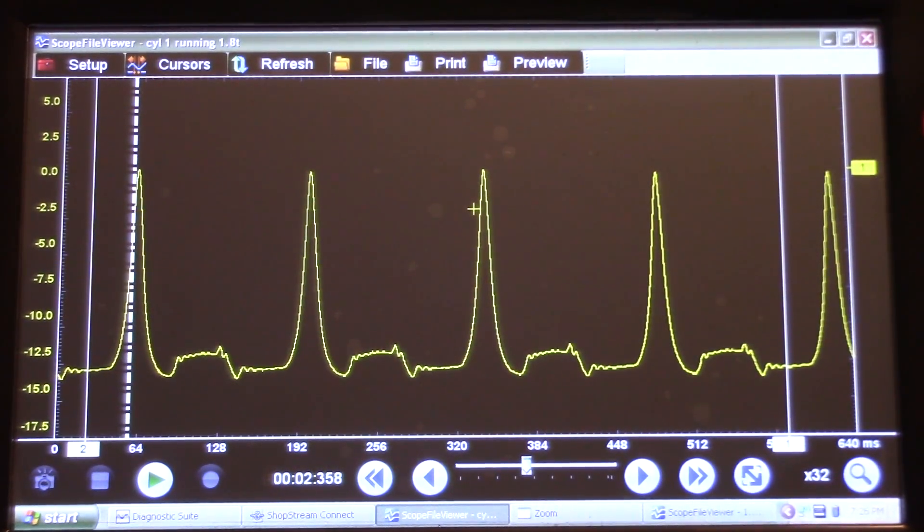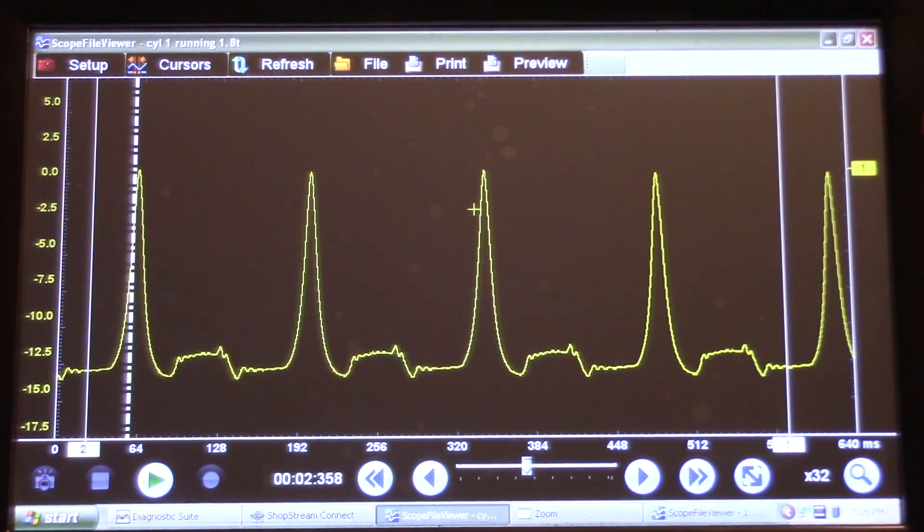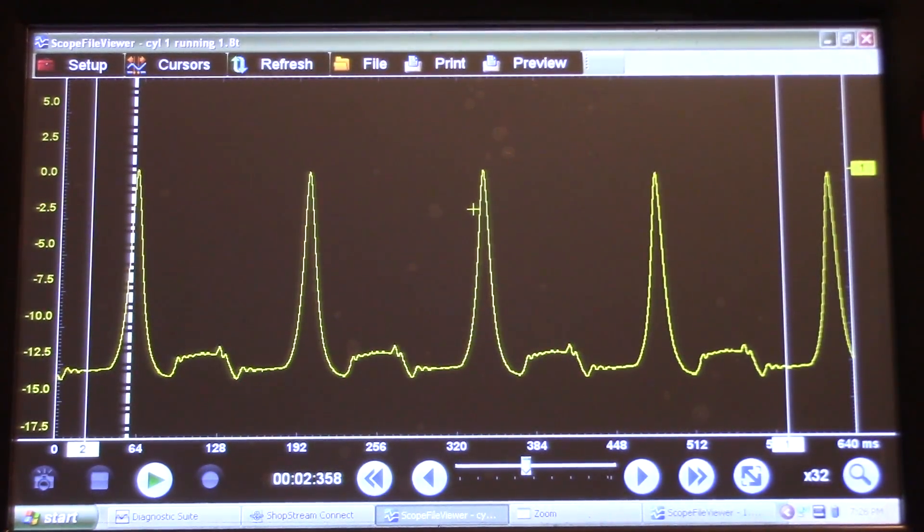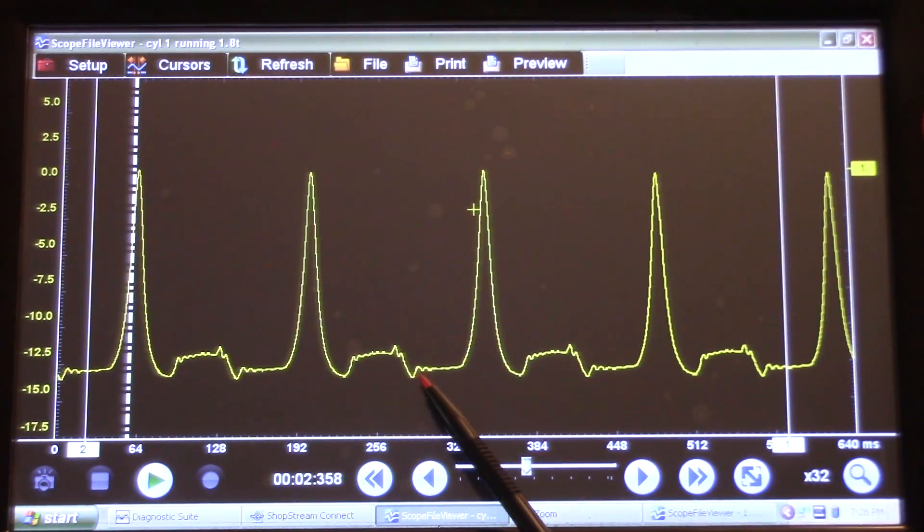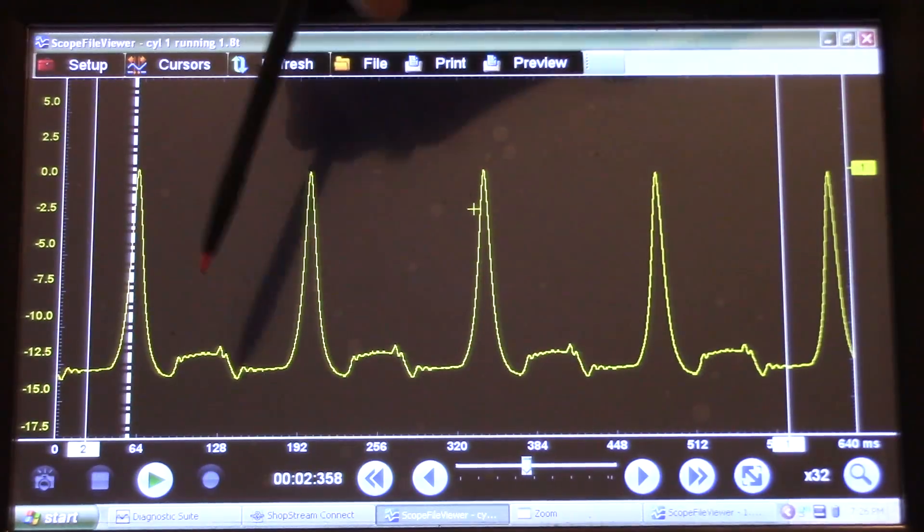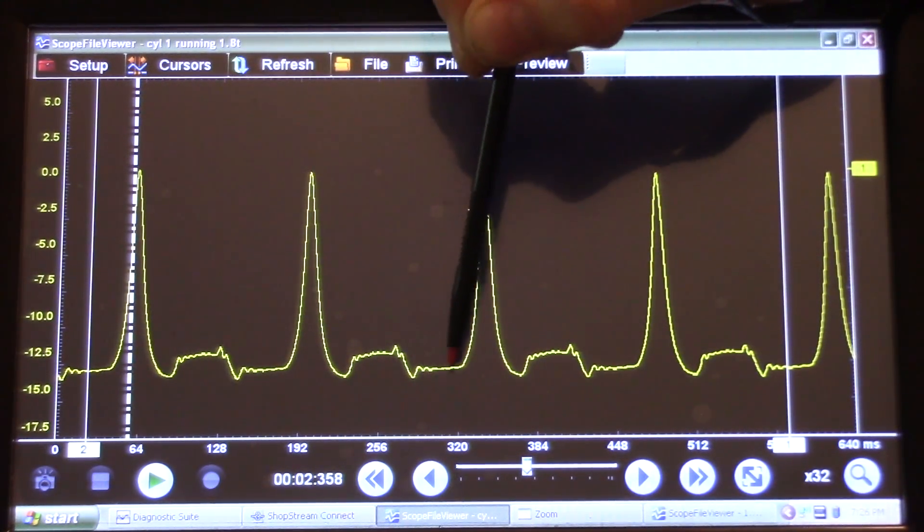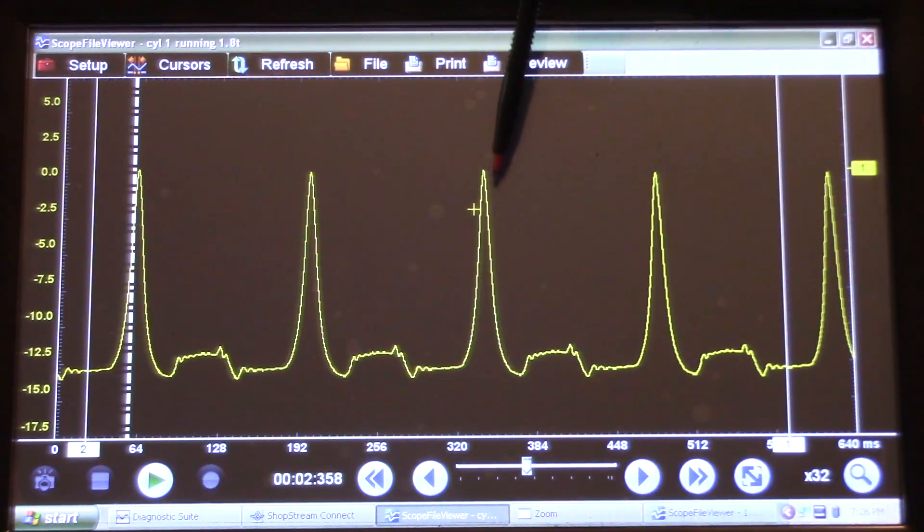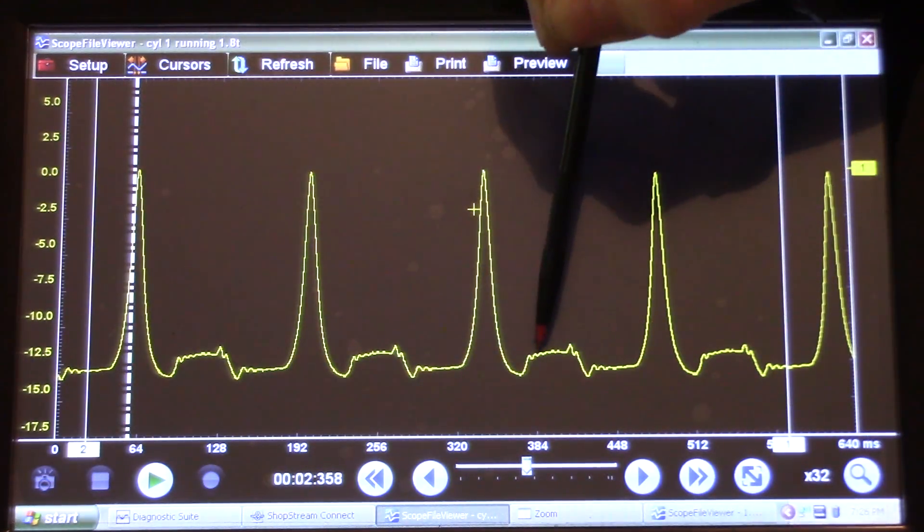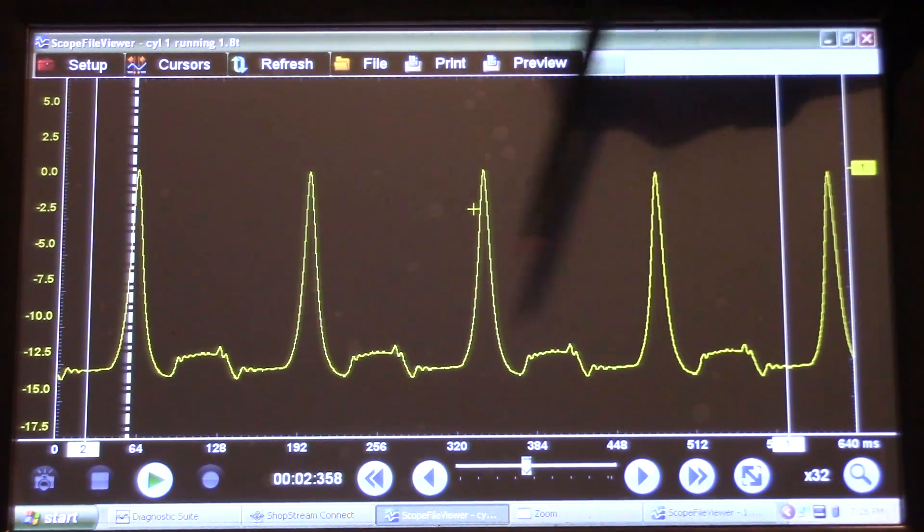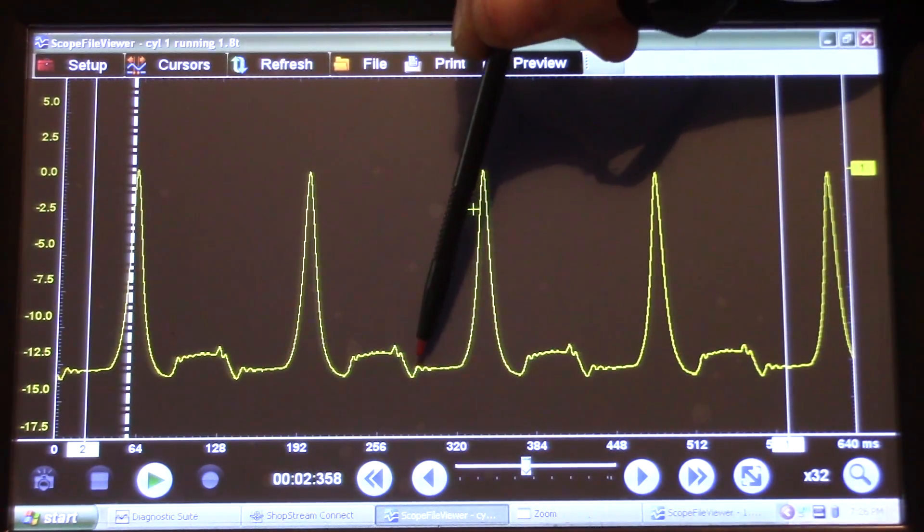All right, so here is the running in cylinder pressure waveform that we took initially. And my concern was this little vacuum pocket right here, right at the end of the exhaust stroke and the beginning of the intake. So right here would be your intake stroke, peak compression, the power stroke, and then your exhaust back down into intake. And I was just concerned of this little pocket right here.